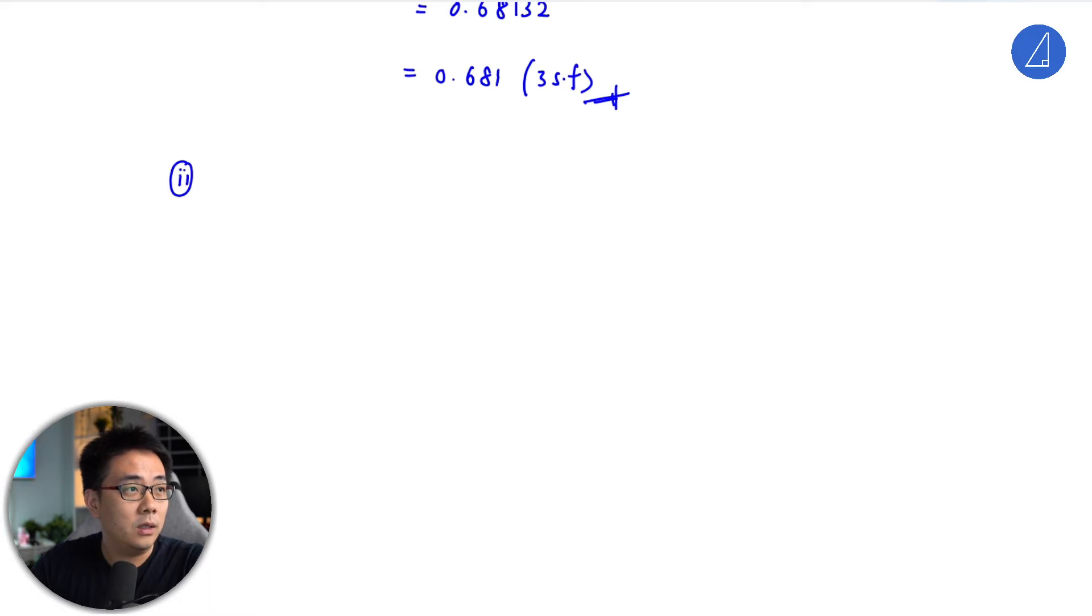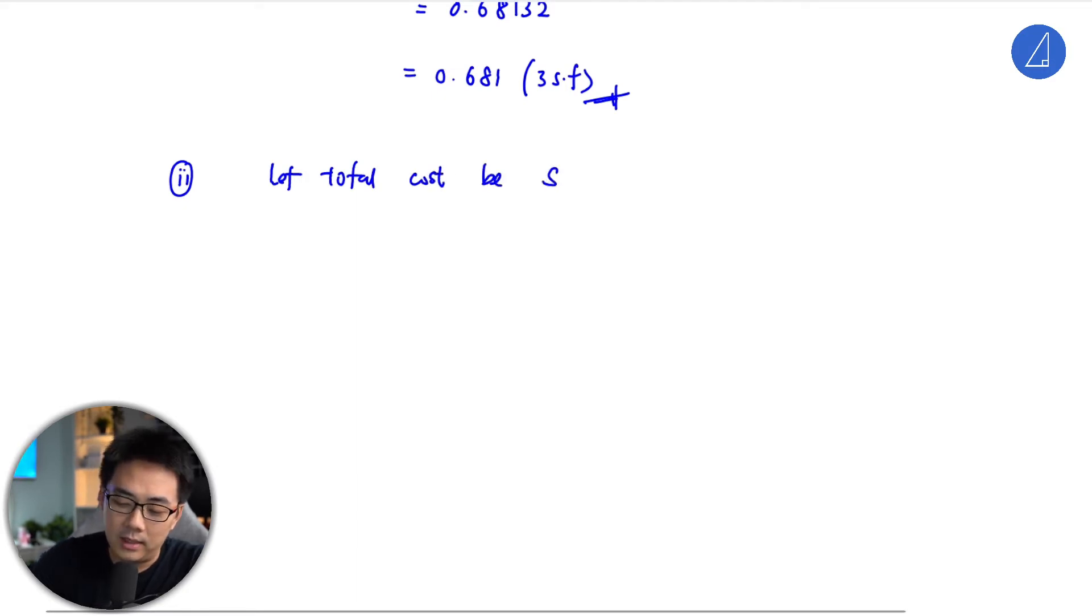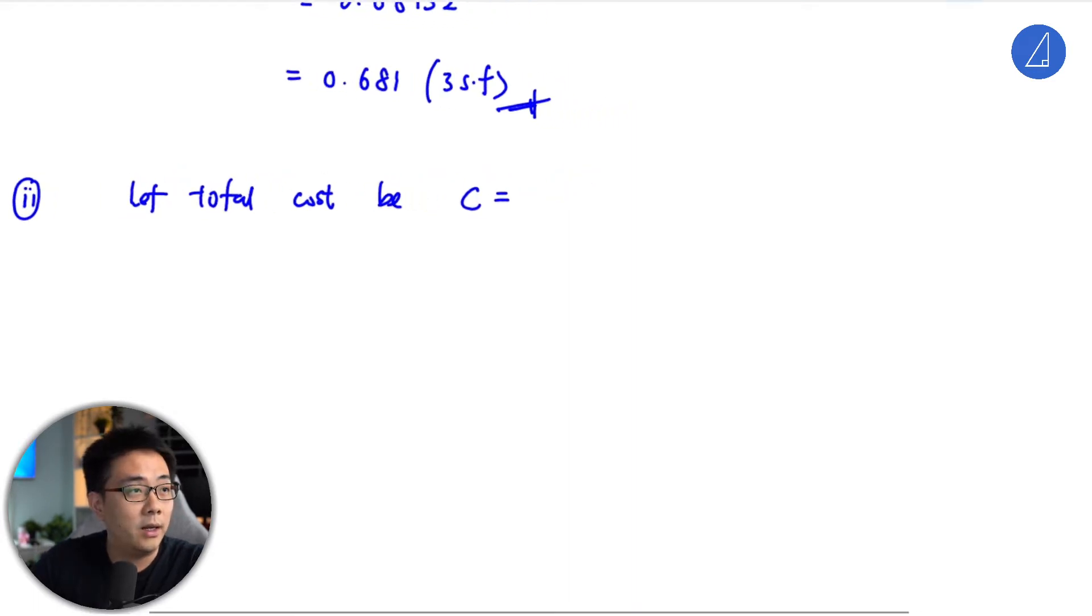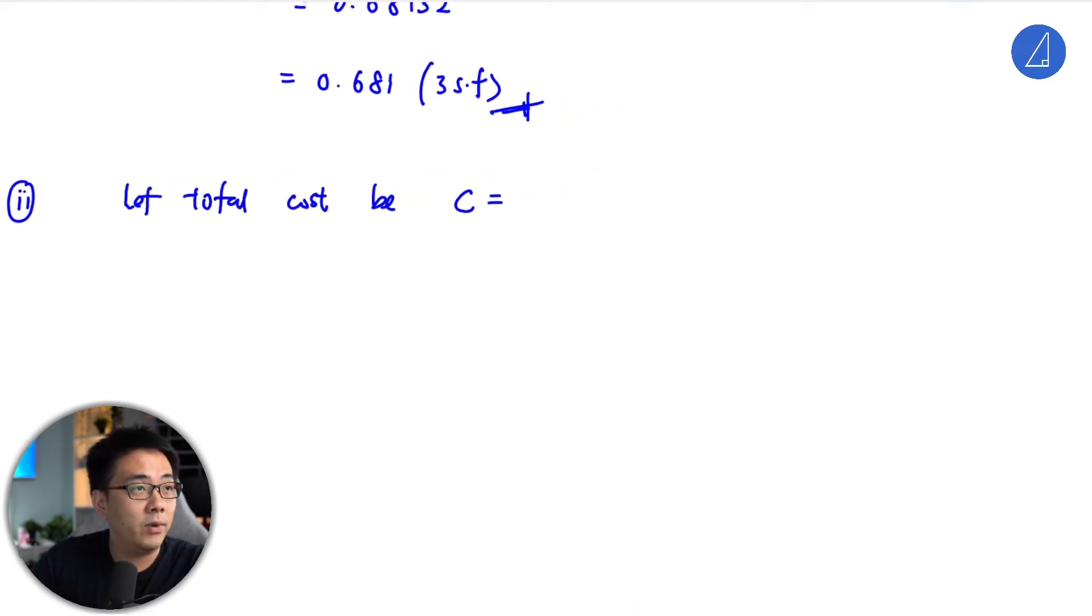So let total cost be C dollars. We know that you would have peak rate is X, so it's 0.12 times X plus 0.05 times Y. Peak is X, cheap is Y.